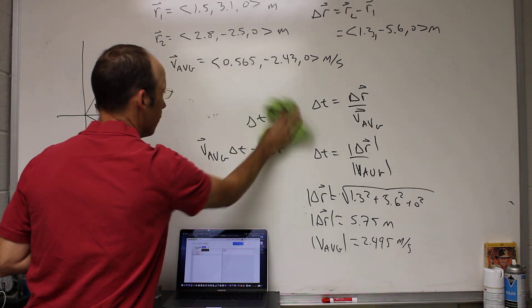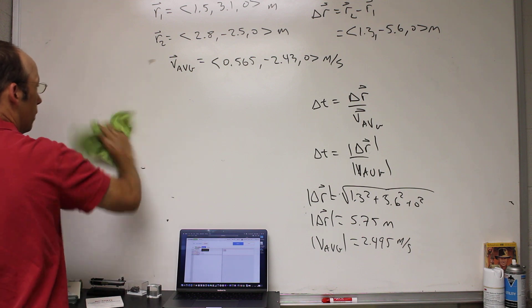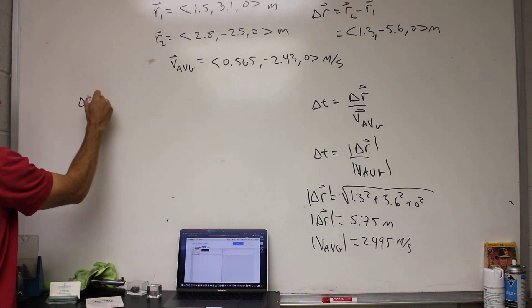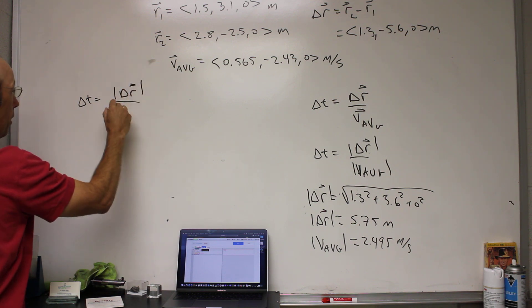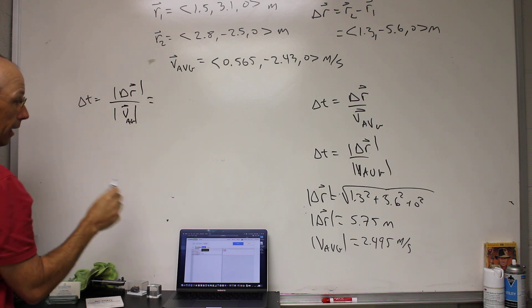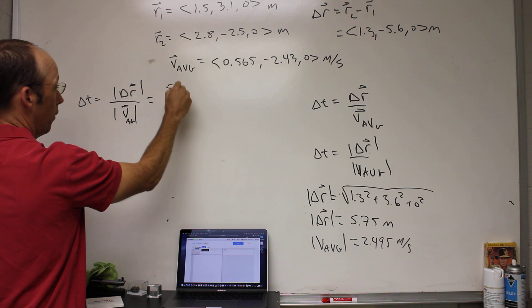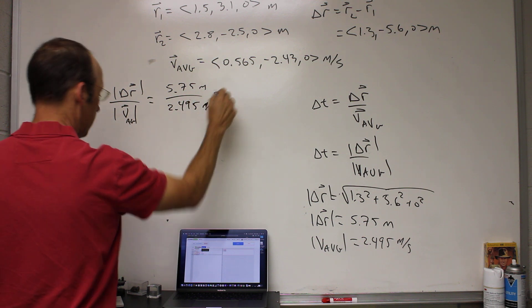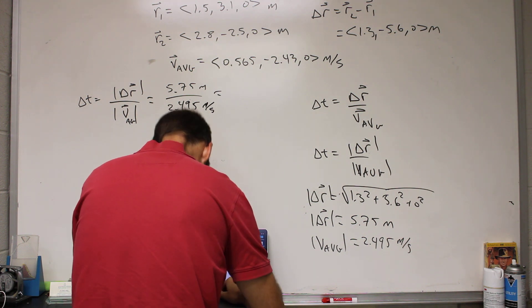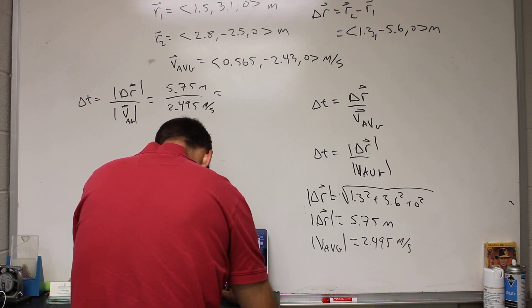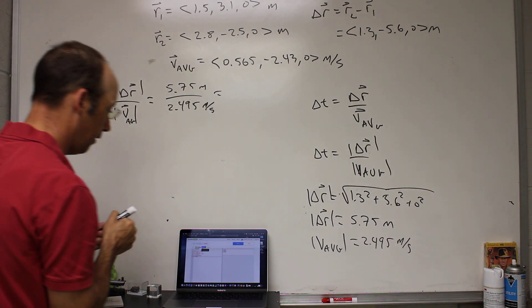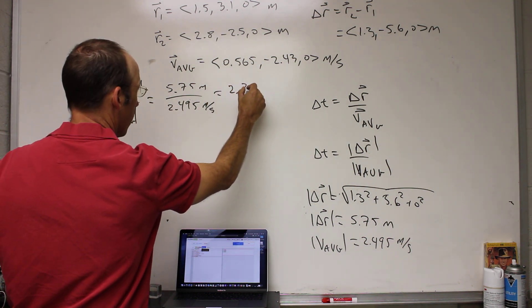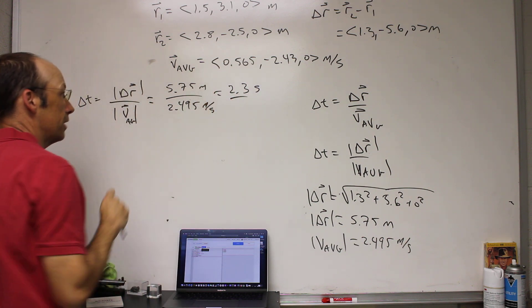So if I know that, I'm going to erase this. So then I can say delta t is going to be the magnitude of delta r divided by the magnitude of v average. And I get 5.75 meters divided by 2.495 meters per second. Let's see, dt1 equals the mag of dr divided by the magnitude of v. Print dt1. So I get dt of 2.3 seconds. And you get meters divided by meters per second, it does give you seconds. So that's my time.